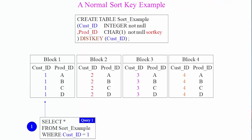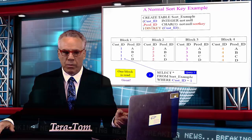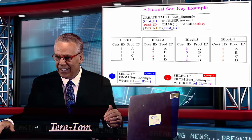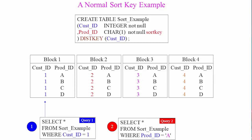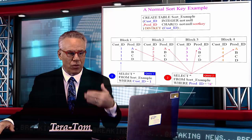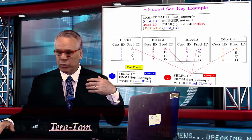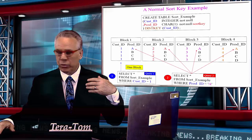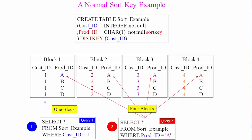And when we say, though, in query two, select everything from our sort example where the prod ID equals A, we have to read every block from every slice because it is going to fall between that min and max value there. So, that's really where we're hurt. The first query, we did fantastic because we used the distribution key. And the second query that really relied upon the sort key, we got burned.